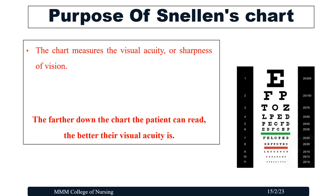The main purpose of the Snellen's chart is to measure the visual acuity of a person, or to assess the sharpness of vision. The farther down the chart the patient can read, the better their visual acuity is.